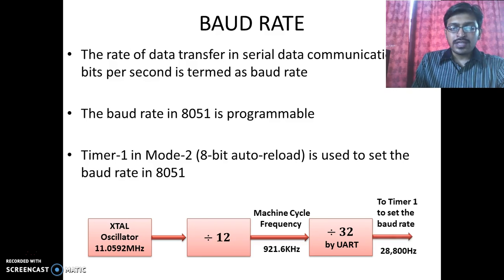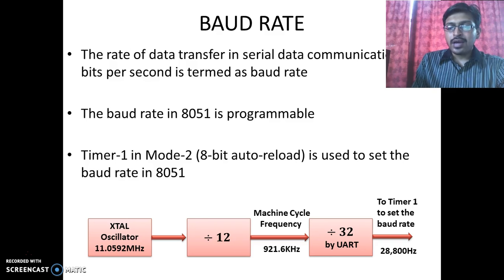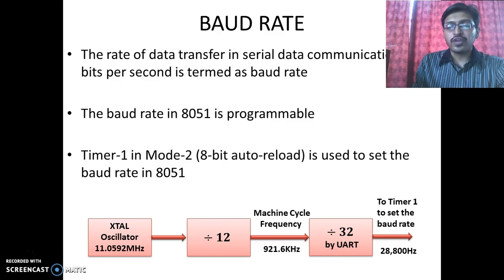The UART circuitry divides the machine cycle frequency by 32 to get the frequency that is provided to Timer 1 to set the corresponding baud rate, and that frequency is 28800 Hz, which is used for setting the baud rate.